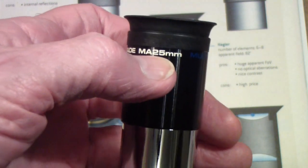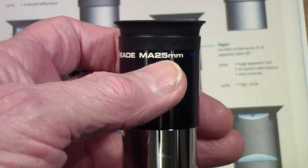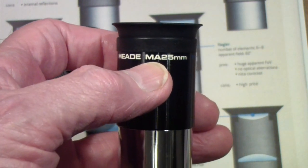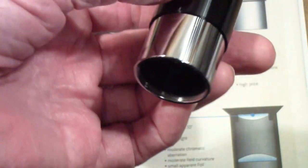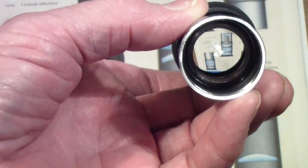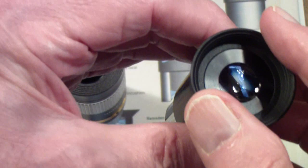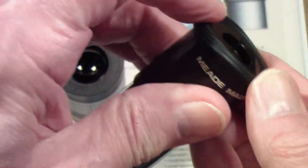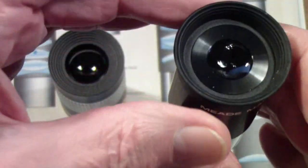An eyepiece, at least anything that's worth using, will have a focal length marked on it. In this case, this is a 25 millimeter, and the MA means Meade achromat. Basically, an eyepiece consists of a set of lenses. This is the end that inserts into the telescope, this is the end that you look through, and in this case it has a fold-down rubber eye guard that you can fold out of the way if you wear glasses.